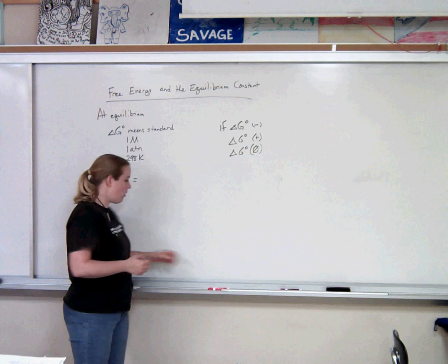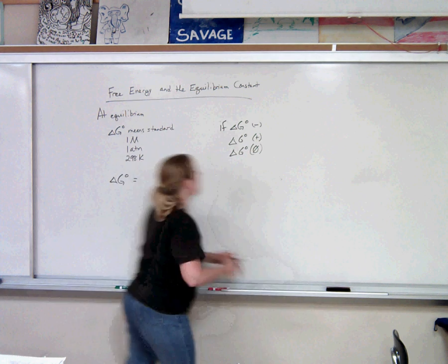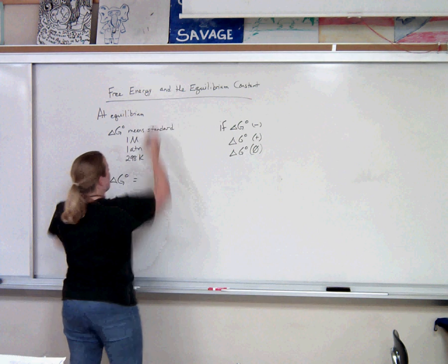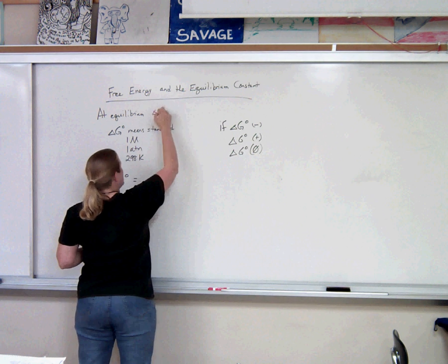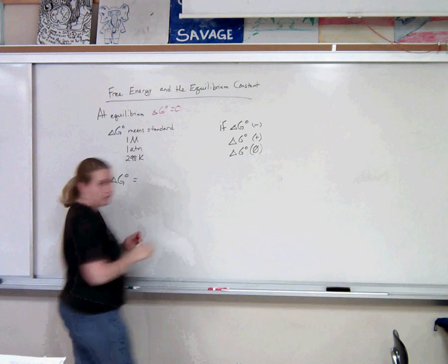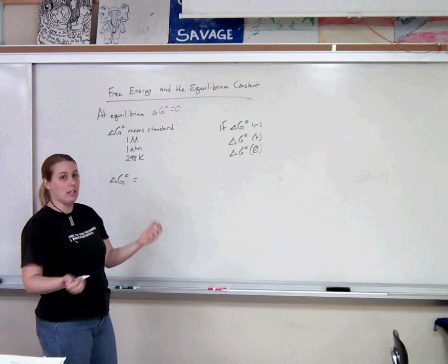So we know already that if we're at equilibrium, then Gibbs is going to equal zero. And we know if we're at equilibrium, we can write a Keq expression.